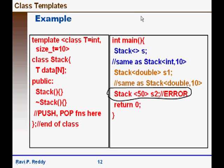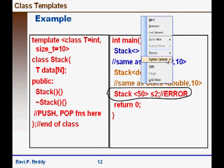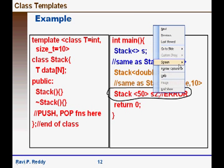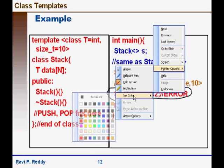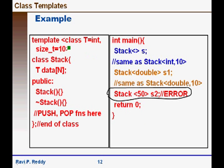Let us see what it means for us. Here is our stack class which takes a type parameter T, class T, and a non-type parameter size T equal to 10. The non-type parameter is of type size T and we use them here, the type parameter T and the size T parameter is to declare the size of the array which will be used for showing the stack.